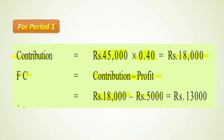Period 1 contribution is ₹18,000, profit is ₹5,000, so Fixed Cost = ₹18,000 minus ₹5,000 = ₹13,000. This confirms our answer. Now let's quickly move to the next point.